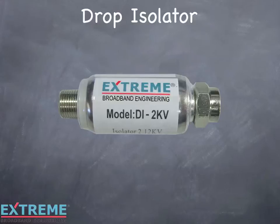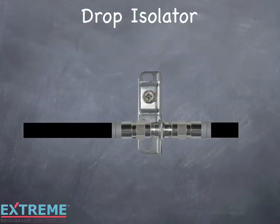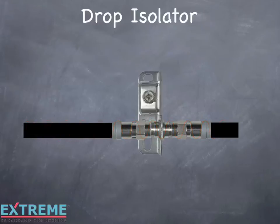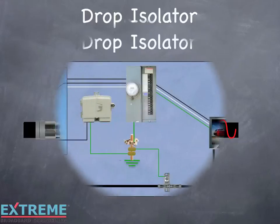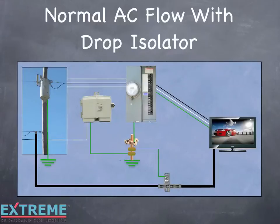The DI2KV drop isolator acts as a decoupler and blocks DC and low frequency AC from passing through, while only adding about a half a dB of insertion loss to the other frequencies. In this example, we're showing AC traveling on the shield of the coaxial cable. By installing the Xtreme DI2KV drop isolator, the AC flow is stopped at the drop isolator. With the DI2KV drop isolator installed, the AC flow is normal and signal impairments are eliminated.